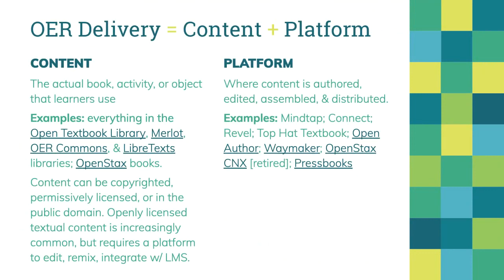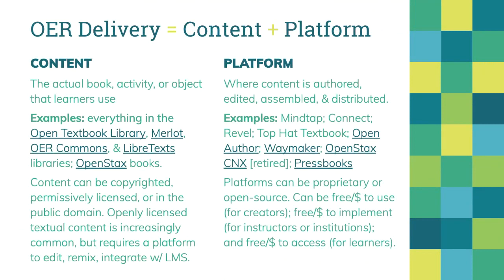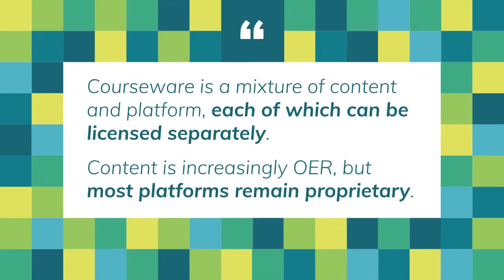Just as with content, platforms can be proprietary or open source. A platform could be free or you have to pay to use it for creators — you might pay for an authoring license, for example. It could be free or cost money to implement for instructors or institutions, and a platform can be free or cost money to access for learners. If you think about what Pearson and Cengage are selling, they're selling access to the platform for learners. Most platforms today are still proprietary.